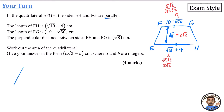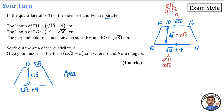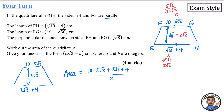Redrawing the trapezium with simplified values: height = 2√2, top = 10 − 5√2, bottom = 3√2 + 4. The area formula gives: [(10 − 5√2) + (3√2 + 4)] ÷ 2 × 2√2. Collecting like terms: integers 10 + 4 = 14, and surd terms −5√2 + 3√2 = −2√2. So: (14 − 2√2) ÷ 2 × 2√2.